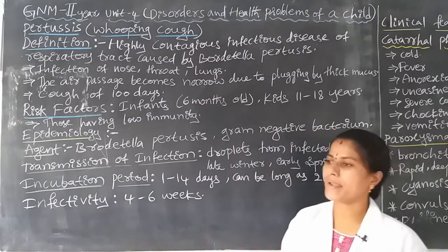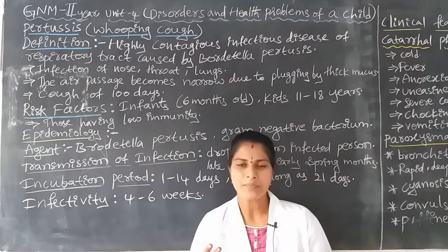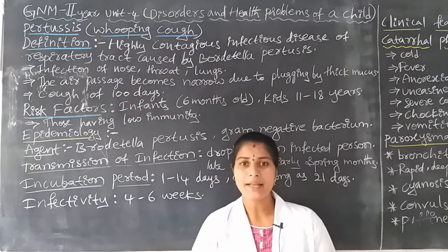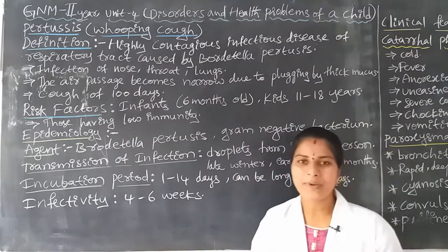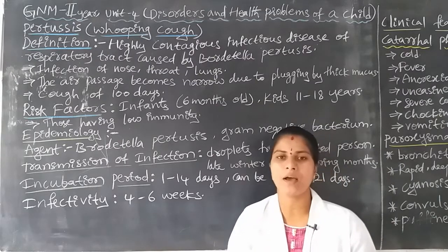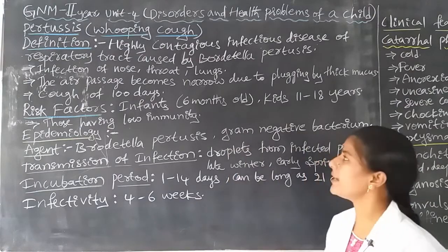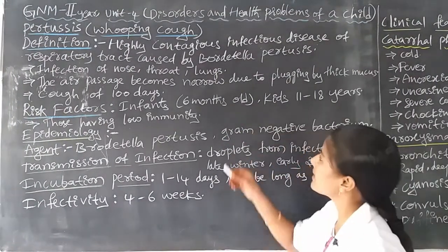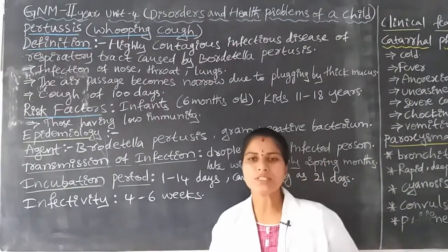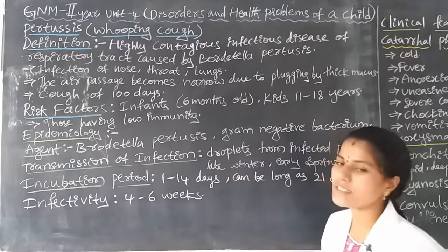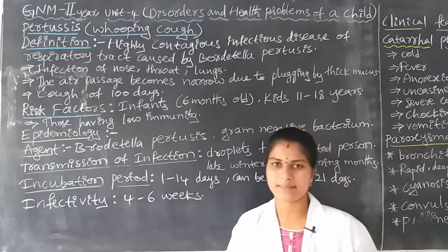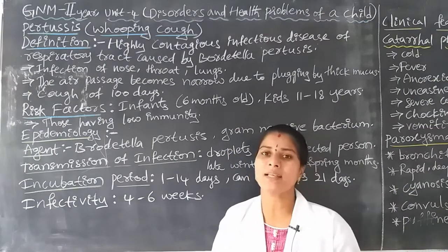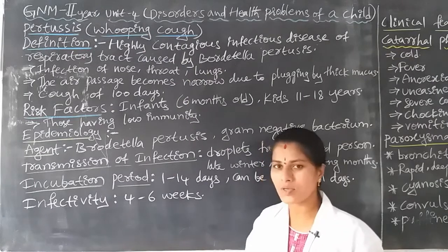There are so many systems in the human body — nervous system, respiratory system, digestive system, endocrine system, and so on. But here, the bacteria enters only into the respiratory tract and causes problems to the respiratory system. The causative organism is Bordetella pertussis. Pertussis is also called whooping cough.